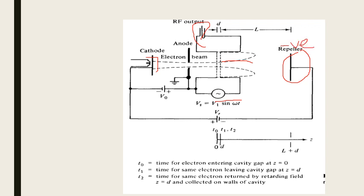T0 is the time at which electrons enter the cavity. T1 is the time at which electrons come out of the cavity. Up to that time, the electrons will spend some time in the drift space. Then the electrons will come back at time T2.